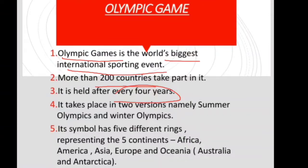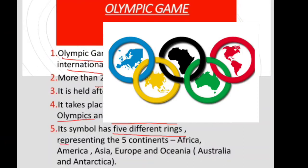The Olympic Games take place in 2 versions: one is Summer Olympics and one is Winter Olympics. The symbol of the Olympics has 5 different interlocking rings, and those 5 rings represent 5 different continents.